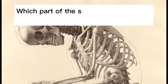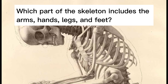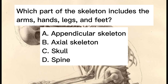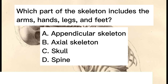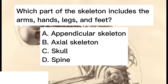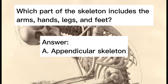Which part of the skeleton includes the arms, hands, legs, and feet? A. Appendicular skeleton. B. Axial skeleton. C. Skull. D. Spine. Answer: A. Appendicular skeleton.